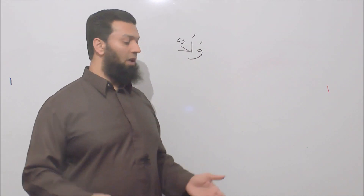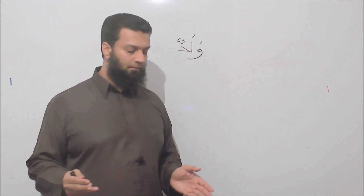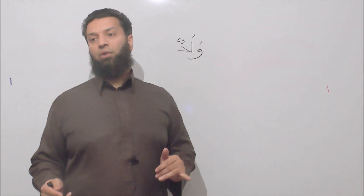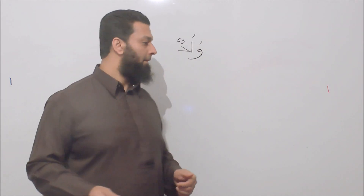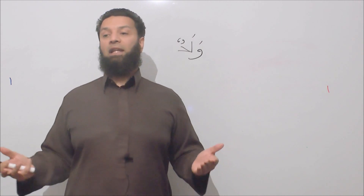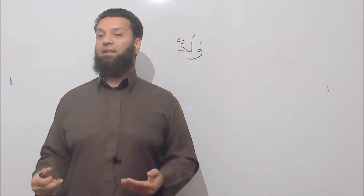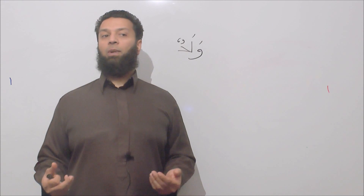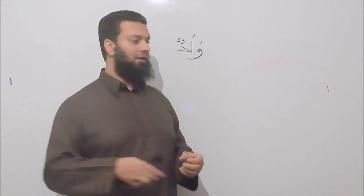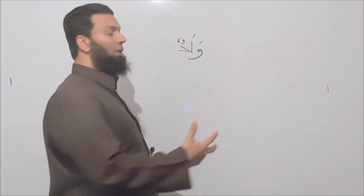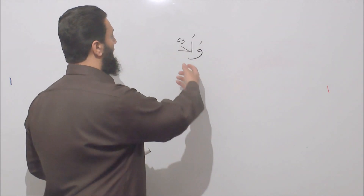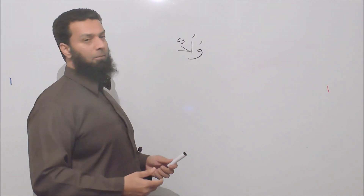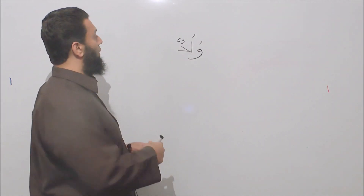The second question is: why is it tanwinu dhammin? The answer is because it's in its default state. The default state for any ismun is marfuun — meaning raised — so the vowel marking has been raised above the word, indicating the word is in its default state, not being subject to any change by any word that precedes it. So that's waladun, a boy. It's not particularly interesting as it is, and that's why we need to add something to it to describe it.